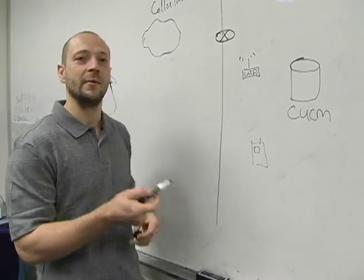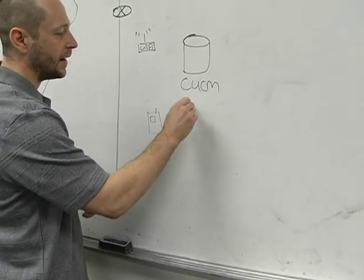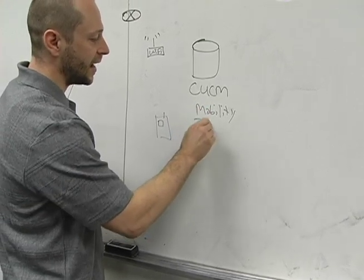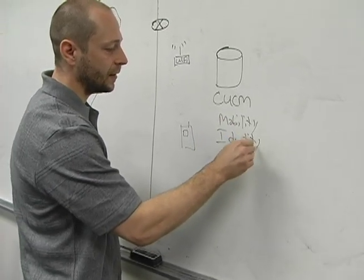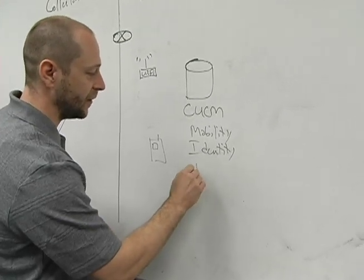In this context, we're going to talk about a voice connection. I've got a mobile phone configured inside Call Manager with something called a mobility identity. This is actually my cellular phone number.